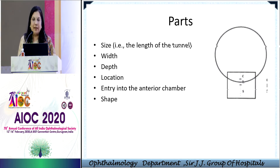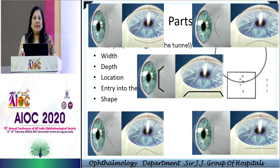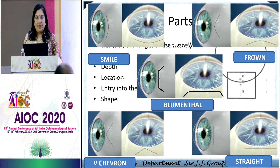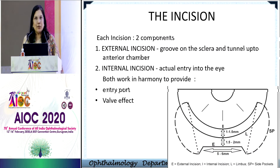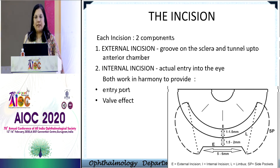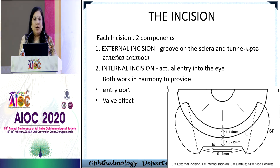This is the length of the tunnel, this is the width of the tunnel. It should be half to two-thirds thickness of the scleral depth, and this is the AC entry. These are the various parts and shapes of the tunnel that we see — a smile incision, a frown incision, Blumenthal incision, chevron incision, and a straight incision. The incision has two parts: the external incision, which is a groove on the sclera, and you dissect it upwards into a part of the cornea, then enter into the anterior chamber. It has to be constructed as a self-sealing valve incision.